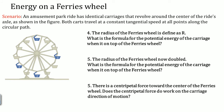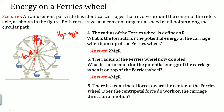The radius of the Ferris wheel is defined by R. What is the formula for the potential energy of the carriage when it is on top? U_G equals mgh, and H here is the diameter — twice the radius — so potential energy equals 2mgR. If the radius of the Ferris wheel is now doubled, the R is doubled, so it becomes 4mgR.